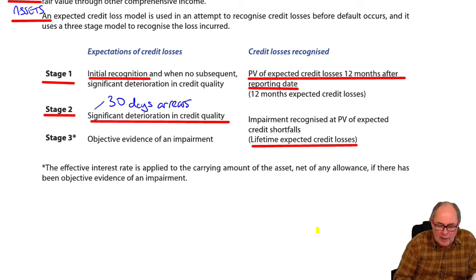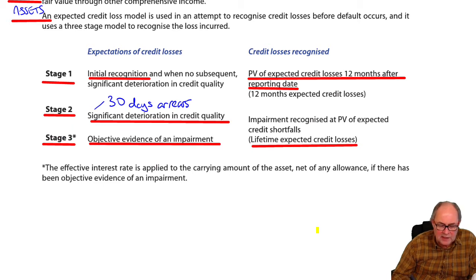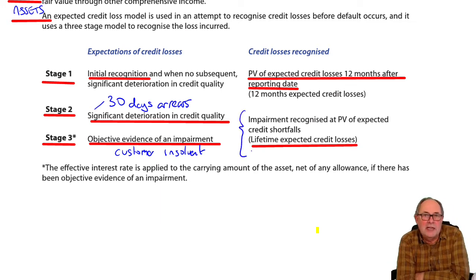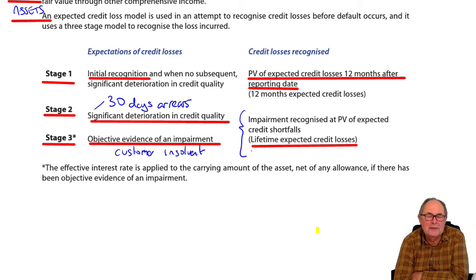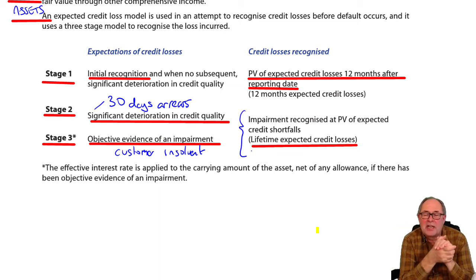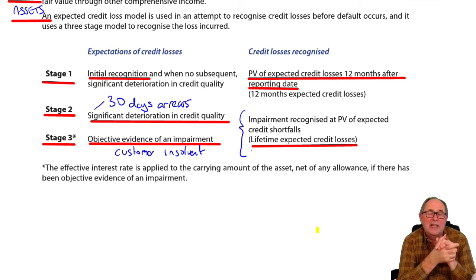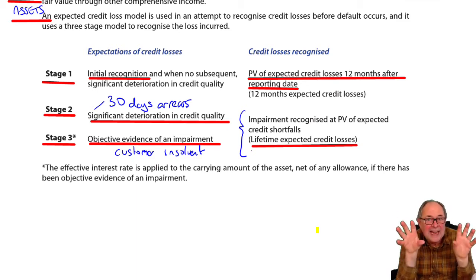Stage three is when it all goes absolutely topsy — where there is objective evidence of impairment. This is much more the stage when the customer is insolvent. In terms of the size of the allowance, it doesn't make any difference because it's still the lifetime losses that you expect. What would happen though is that instead of having two ledger accounts, you would now just have one. There's no point keeping the allowance account anymore, so they net the allowance and the loan asset accounts off, and you end up with one account in the ledgers.